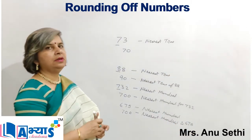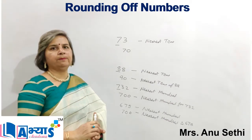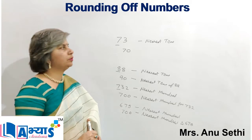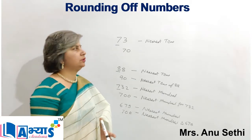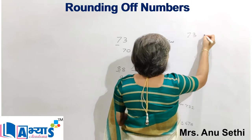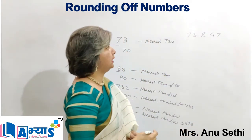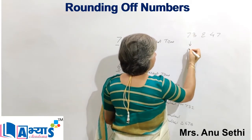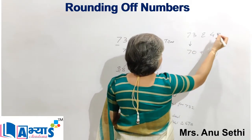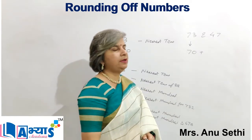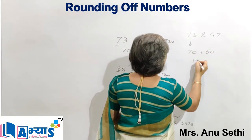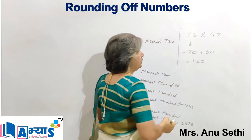This is how we can find the nearest tens or nearest hundreds, or it can be any position. Now, if we are given a question to perform addition of two numbers by rounding off to the nearest tens — for example, if I have to add 73 and 47 — I will first round off 73. Since 3 is less than 5, it becomes 70. For 47, the units digit is 7 which is greater than 5, so it becomes 50. Now I will add 70 and 50, which gives 120. This is how we perform addition after rounding off.